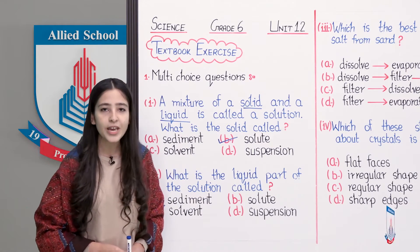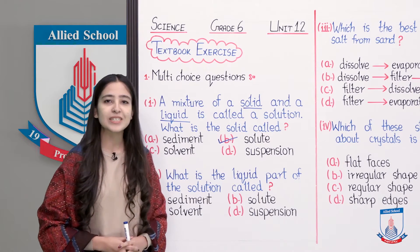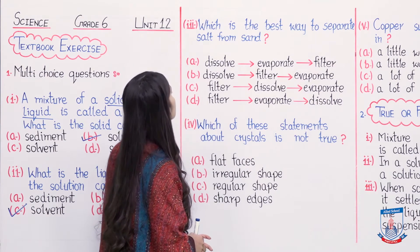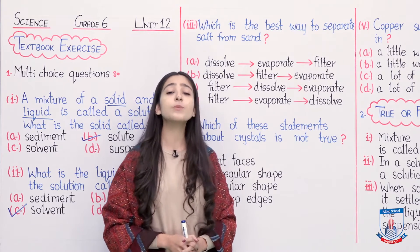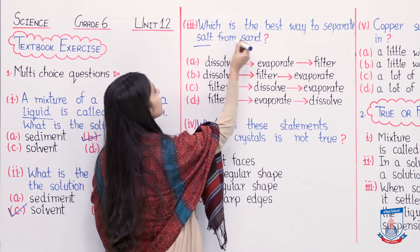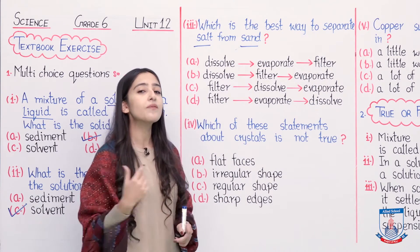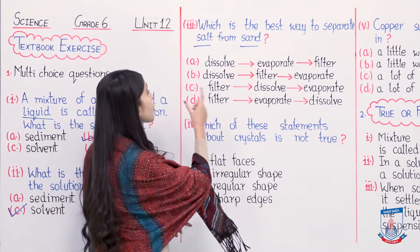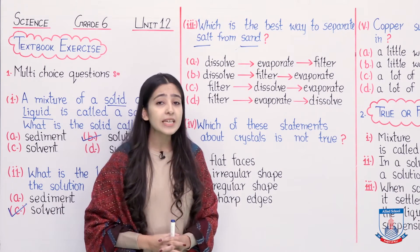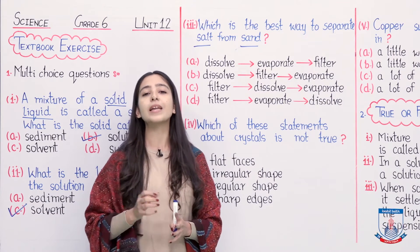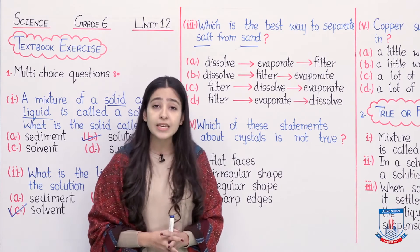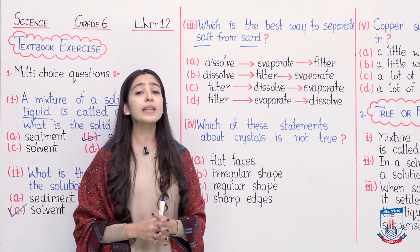Let's move to the third statement: which is the best way to separate salt from sand? We did an experiment in this chapter where we separated a salt and sand mixture. Salt is soluble in water but sand is not. First, we add water to the salt and sand mixture and stir it. Salt will dissolve in the water, but sand will not dissolve, so we have a suspension.